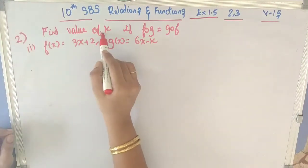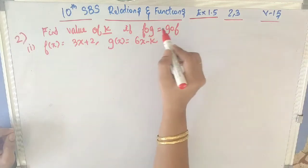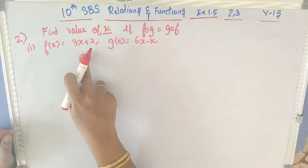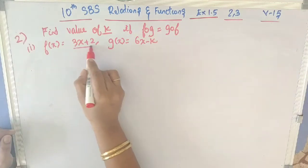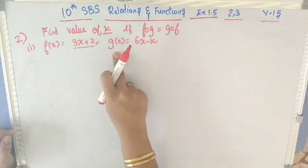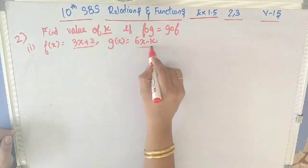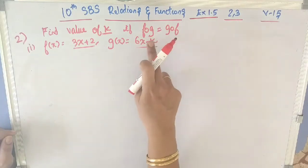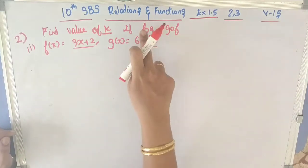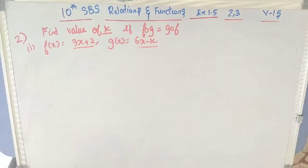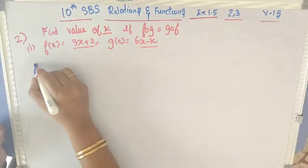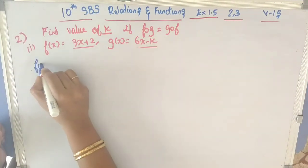Now let's go into the exercise. We have to find the value of k if f∘g = g∘f. Here f(x) = 3x + 2 and g(x) = 6x − k. We have to find k using the condition f∘g = g∘f.